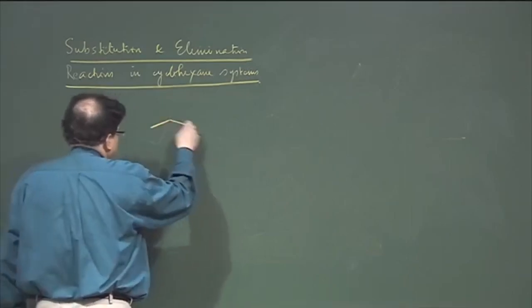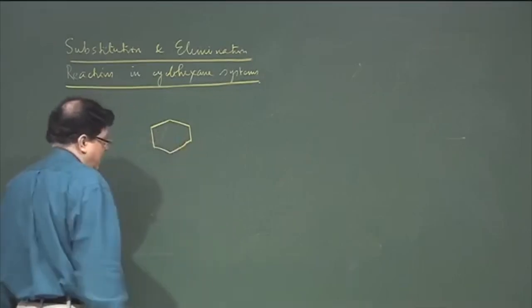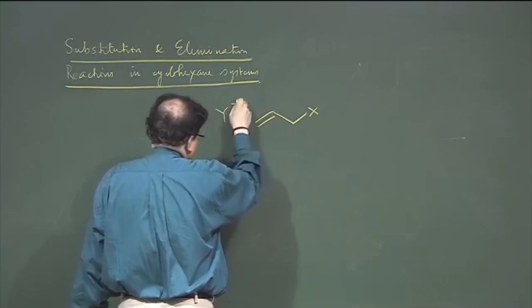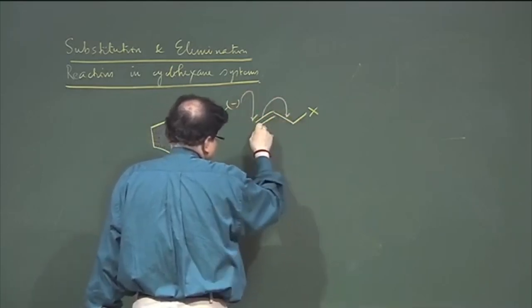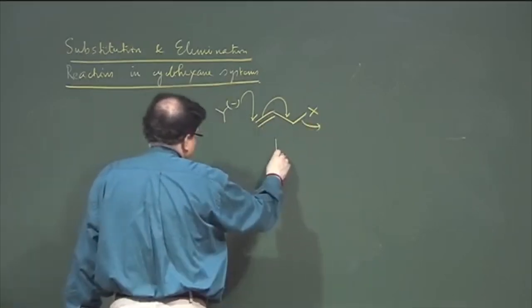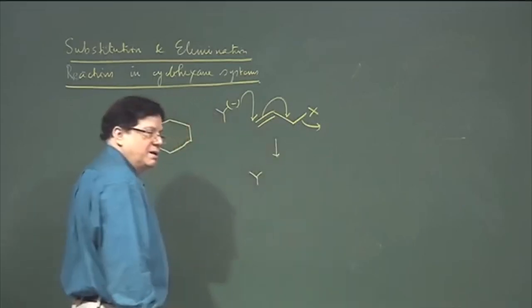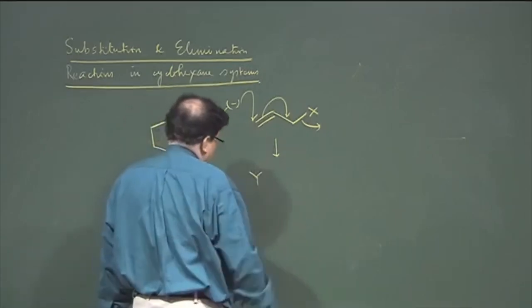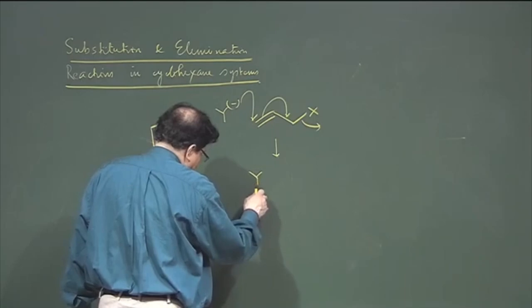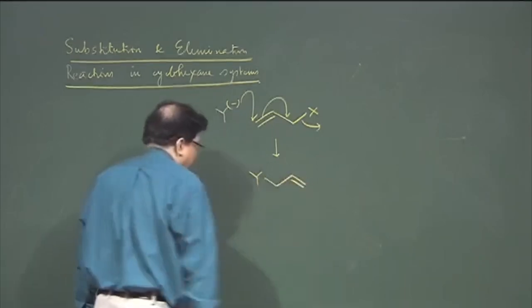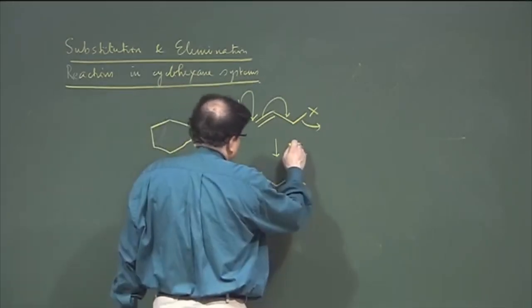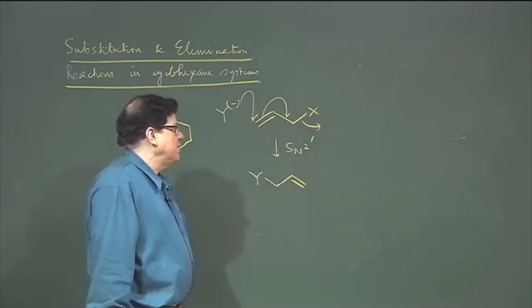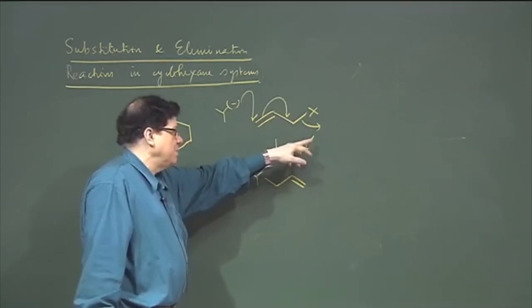There are reactions that proceed via allylic rearrangement — called SN2 prime. If you have a leaving group and an allylic system, the nucleophile can attack the end carbon of the double bond (the gamma carbon) rather than the carbon bearing the leaving group. So Y is attached not by direct attack on the carbon bearing the leaving group, but by attacking the allylic carbon of the double bond. This is SN2 prime — SN2 but attacking a different carbon.